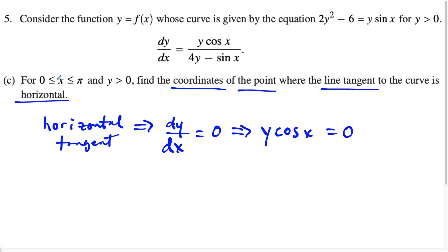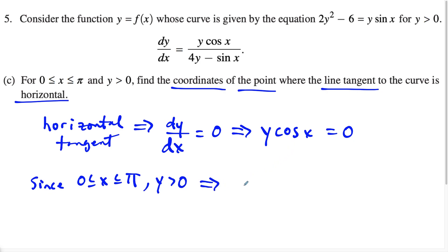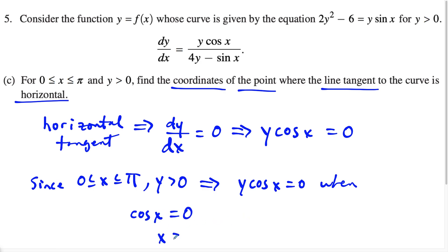We must be mindful: since zero is less than or equal to x which is less than or equal to pi, and y is positive, y cosine x equals zero when cosine of x equals zero. This gives us x equals pi over two, since x must be between zero and pi. Technically there are infinite solutions for cosine x equals zero, but this is the one within our interval.